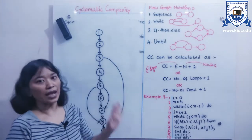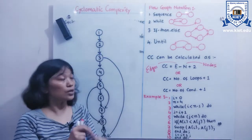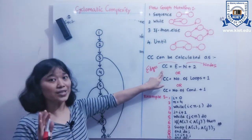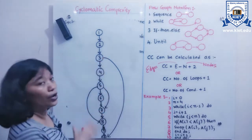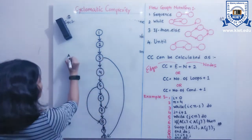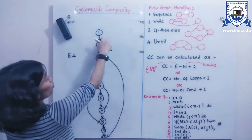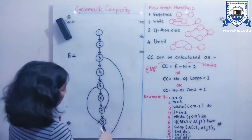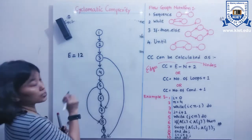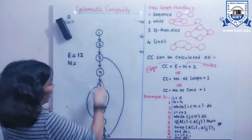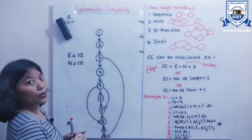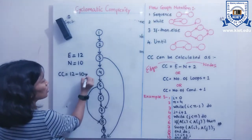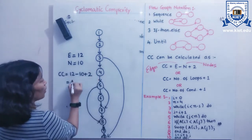Now I need to calculate the cyclomatic complexity using the first formula. Counting the edges in the control flow graph: 1, 2, 3, 4, 5, 6, 7, 8, 9, 10, 11, 12 — so there are 12 edges. The number of nodes is 10. Therefore CC = E − N + 2 = 12 − 10 + 2 = 4. The cyclomatic complexity is 4.